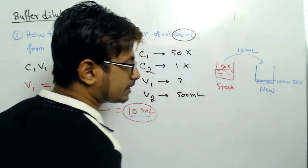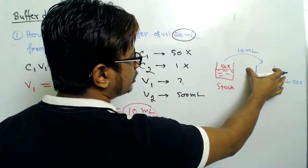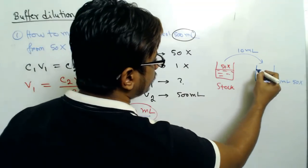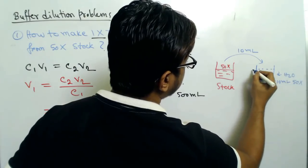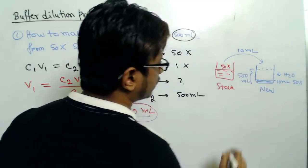10 milliliters of 50X, and the rest of the volume we need to add distilled water to make the total volume of 500 milliliters.